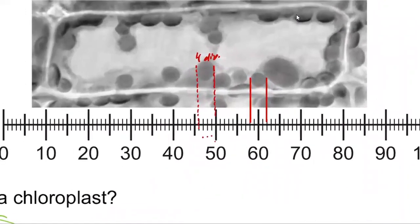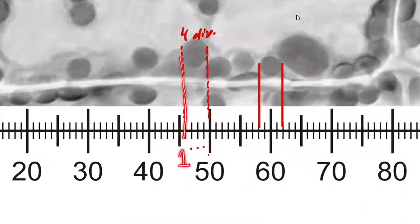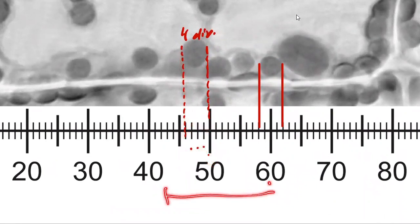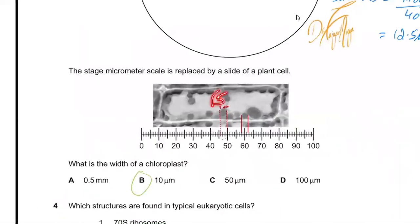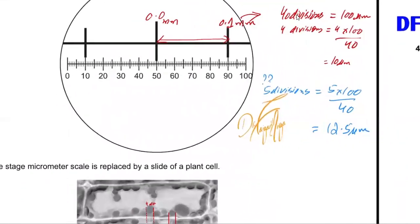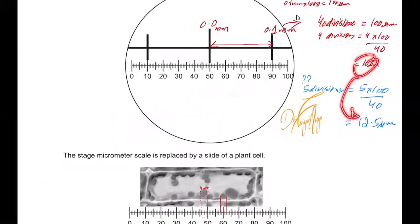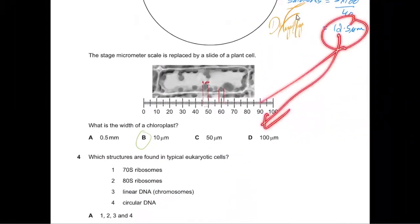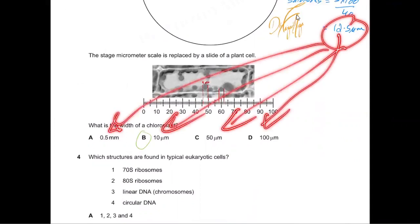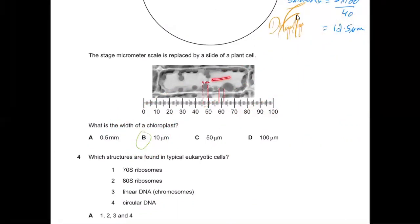A common error students make is counting four divisions as five. This happens because students treat the first line as one rather than zero. Remember that whenever we use a scale, the first value is always zero — we never start a scale with one. Even if you counted five divisions, applying the ratio gives 12.5 micrometers, which is still closest to the correct answer among the options. But the correct method gives exactly 10 micrometers.